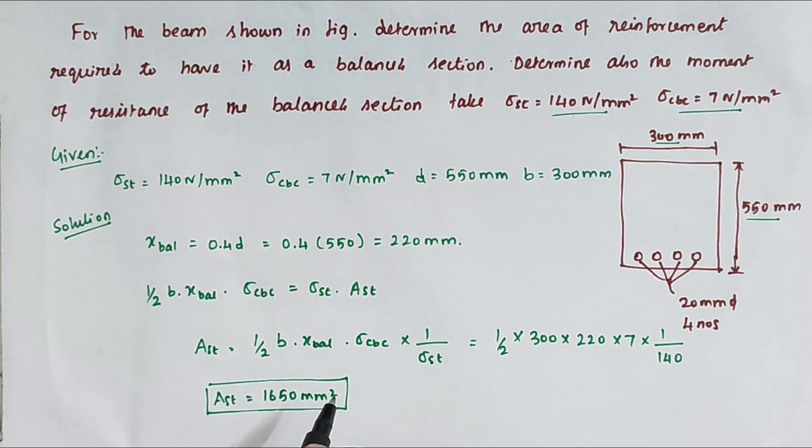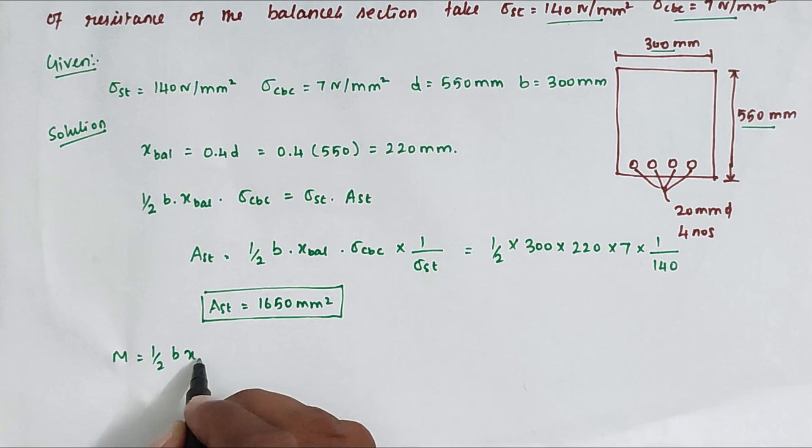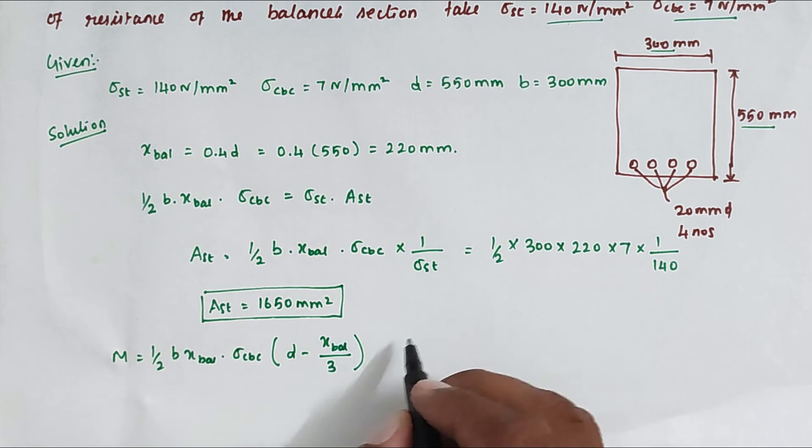Now we have to find out the moment of resistance. M = ½ × B × X_bal × σ_CBC × (D - X_bal/3). Now we can substitute all the values. So M = ½ × 300 × 220 × 7 × (550 - 220/3).